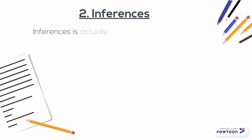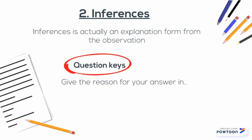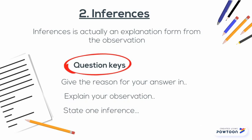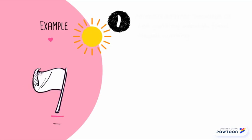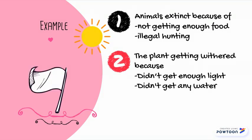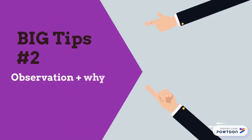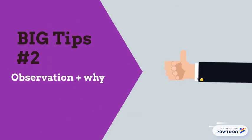Number two, inference. Inference is actually an explanation formed from the observation. Find out the question keys in the question. For example, animals became extinct because of not getting enough food and illegal hunting. The plant became bitter because it didn't get enough light and it didn't get enough water. Big tip number two: inference is an observation plus why.